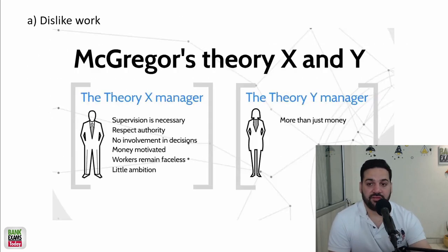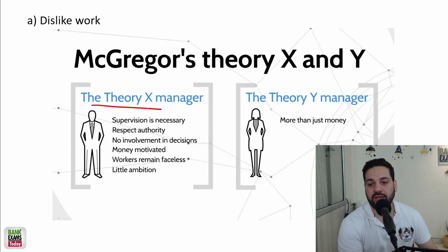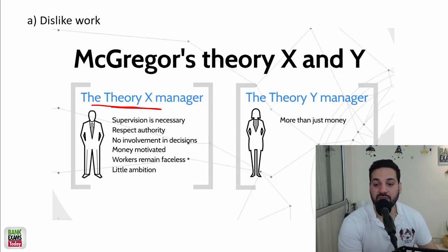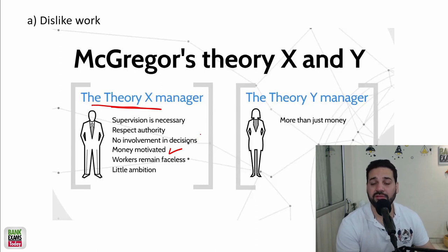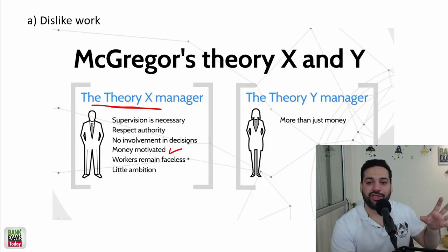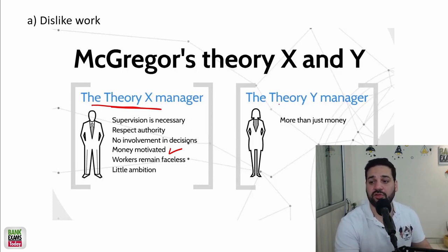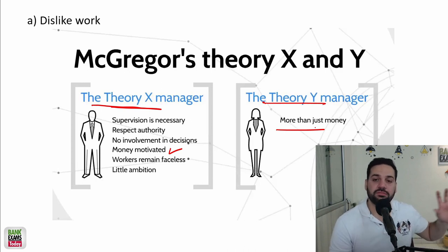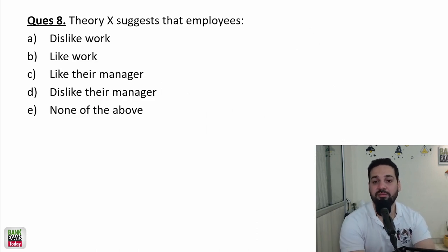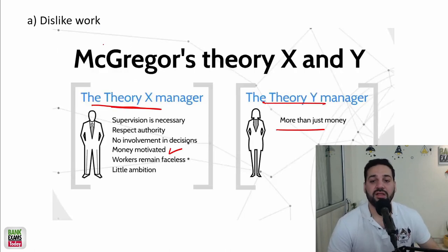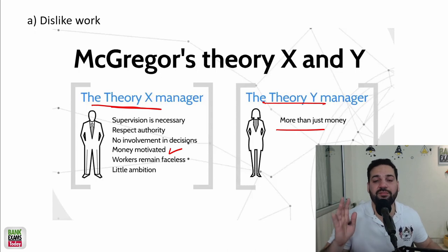Theory X and Theory Y — let's give it a look. This is McGregor's Theory X and Theory Y. According to Theory X, the manager thinks employees are lazy, supervision is necessary, money motivates employees, employees should not make decisions, and they are ambitionless. Theory Y managers think it's more than money — the workers do not dislike work, they can have ambition, and they don't need supervision at every point.